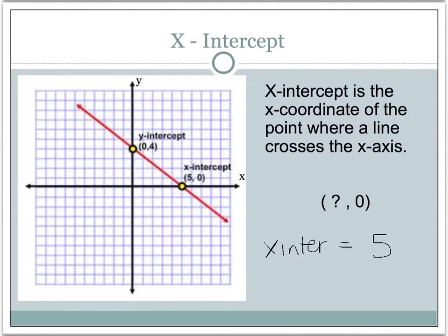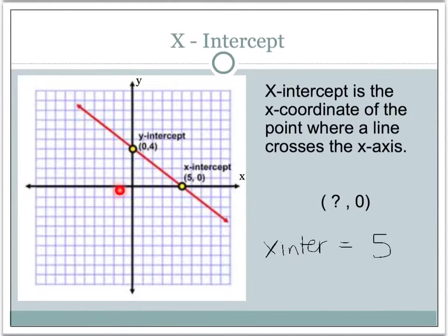Now if you'll notice, x-intercepts will always have a form of some number comma 0. So the x-part will always be the number, and y will always be 0 in an x-intercept. Any point that lies on the x-axis is 0 in the y-direction, so that's why the y-coordinate will always be 0 on an x-intercept.